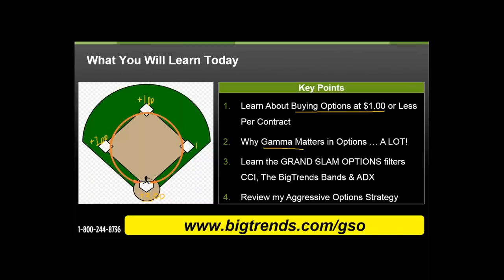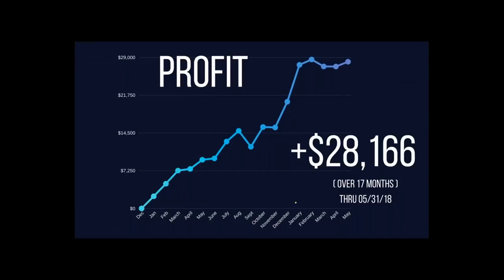Everything I'm sharing today is all about timing — it's not just one thing, it's everything. Metastock helps me do that. We're going to talk options theory and strategy. There's a term a lot of people don't think about — gamma. Most people think about volatility, theta, or vega — the Greeks — but gamma is very important in this Grand Slam Options Strategy. I'll share with you how gamma works in your favor. We'll also cover three key indicators: the CCI, the Big Trends Bands based on Williams Percent R, and the ADX — the Average Directional Movement.